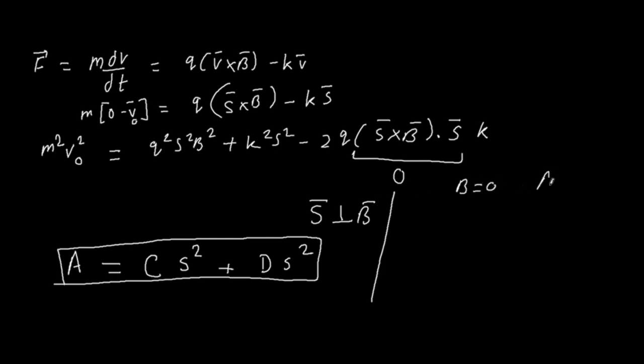So now we are going to form three different equations for three different situations. When B is equal to zero, the equation will be A is equal to D S square, equation number one. When B is equal to B, the equation will be A is equal to C S square plus D S square, equation number two. When B is equal to 2 times B, the left side will be A, the right side will be 4C S square plus D S square. This is equation number three.